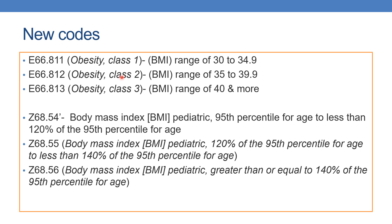The next code is E66.812, coded for obesity Class 2. Class 2 obesity indicates a BMI range between 35 to 39.9. The next code is E66.813, which indicates obesity Class 3, where the BMI range should be 40 or more.